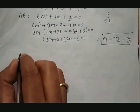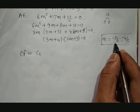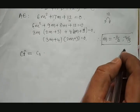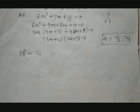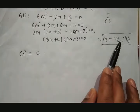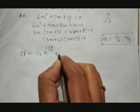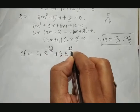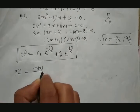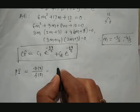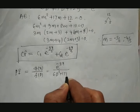With these roots, we construct the complementary function. Since the roots are real and different, the complementary function is: CF = C₁·e^(−3x/2) + C₂·e^(−4x/3). Then we proceed to the particular integral, which is PI = e^(−3x) / f(D), where f(D) = 6D² + 17D + 12.